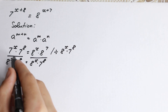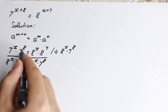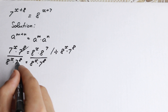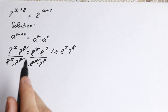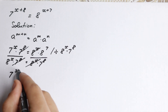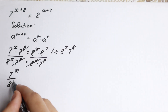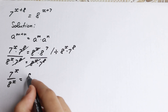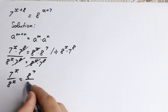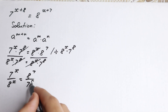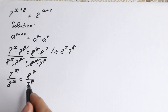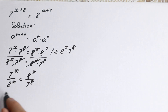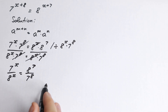If we look closely, we can cancel the common terms. As a result, we have 7 to the x over 8 to the x equal to 8 to the 7th power over 7 to the 8th power. Now we have the x terms on the left and the constants on the right — everything is great.